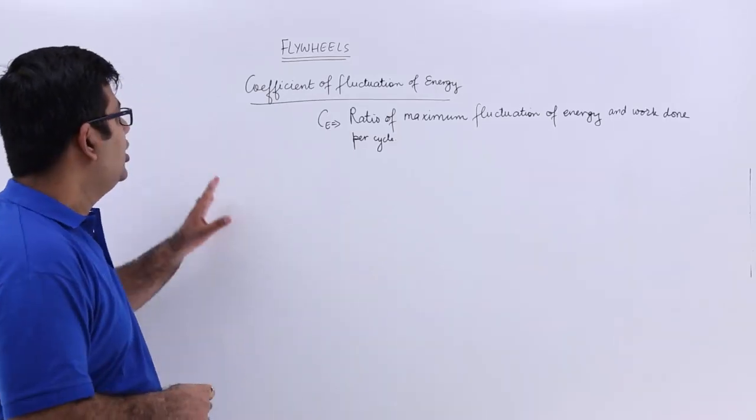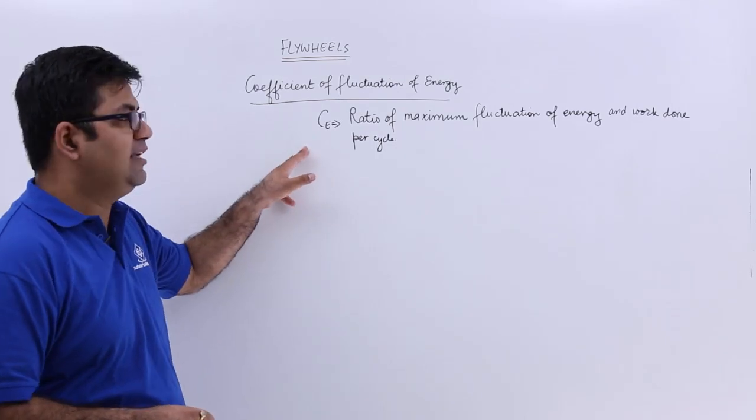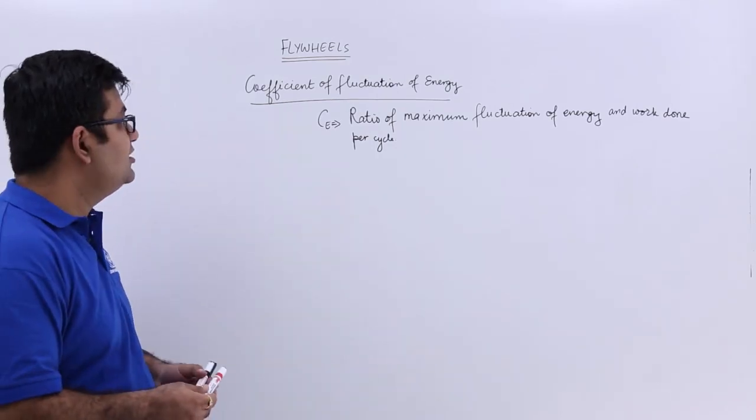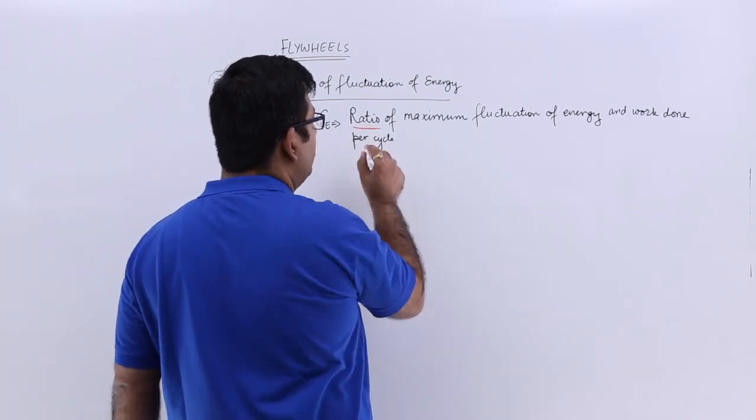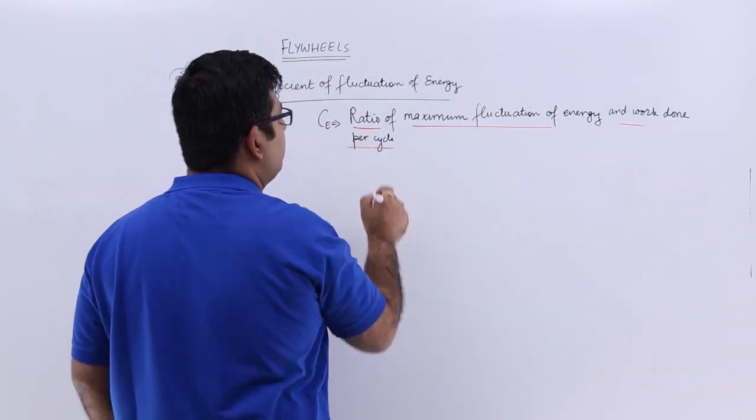Now let us talk about the coefficient of fluctuation of energy, which is denoted by CE. So CE is the ratio of maximum fluctuation of energy and the work done per cycle.